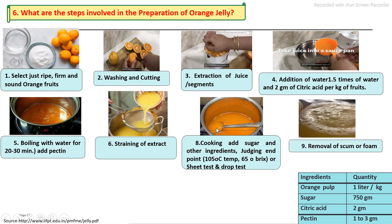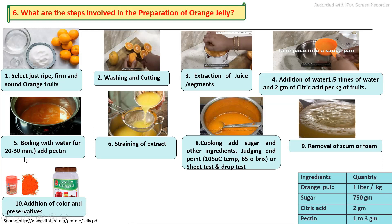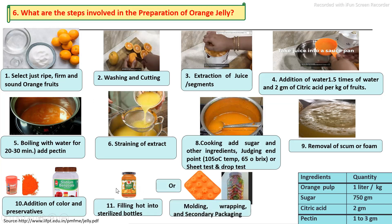During cooking, any scum that forms is removed. At the end, coloring, flavoring, and preservatives are added, then filtration is done. The product is transferred into glass bottles, properly sealed, or transferred into molds, followed by packaging.